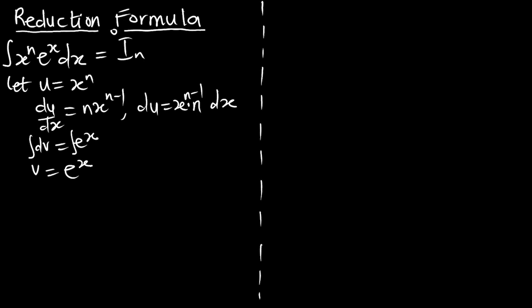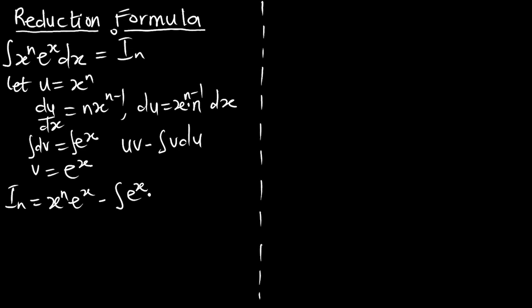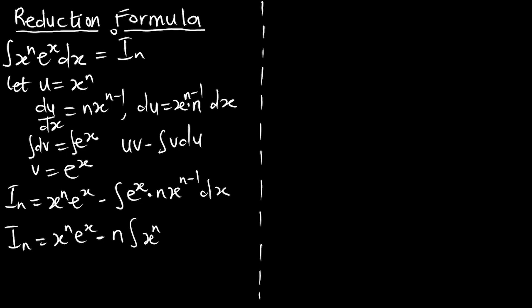With the integration by parts, I can say i_n is equal to — we know that the integration by parts is u*v minus the integral of v*du. So my u, which is x^n, times v, which is e^x, minus the integral of v, which is e^x, times du, which is n * x^(n-1) dx. And this is what we call the reduction formula.